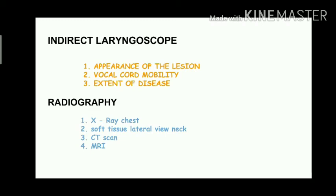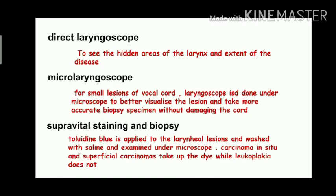Radiographical investigations include X-ray chest, soft tissue lateral view of neck, CT scan, and MRI. Direct laryngoscopy is used to see the hidden areas of the larynx and extent of disease that cannot be seen with indirect laryngoscopy. Micro laryngoscopy is done to see small lesions of the vocal cord; it is performed under a microscope to better visualize the lesion and to take a more accurate biopsy specimen without damaging the cord.